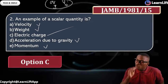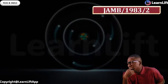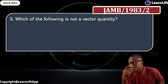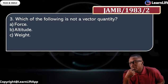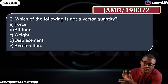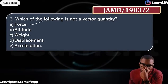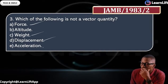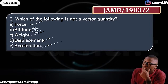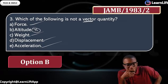Question three, 1983 question two: which of the following is not a vector? Options: A — force, B — altitude, C — weight, D — displacement, E — solution. Choose your answer. Force is a vector, weight is a vector, displacement is a vector, solution is a vector. But we said length, height, and altitude are scalars — so altitude is not a vector, making option B the answer.